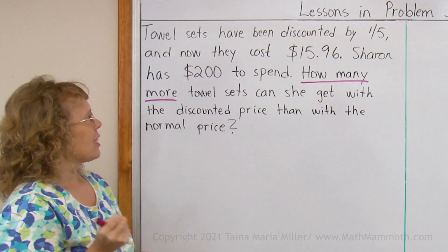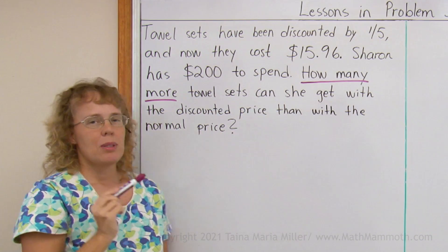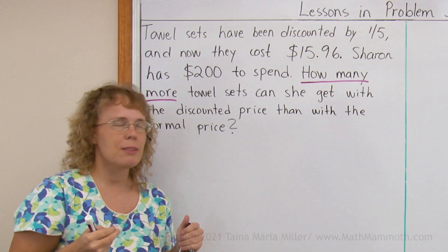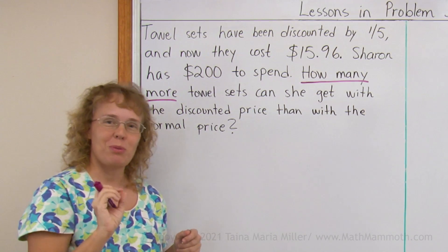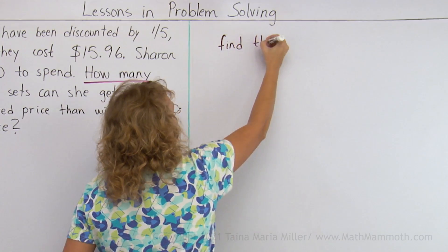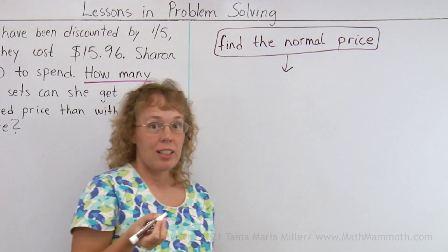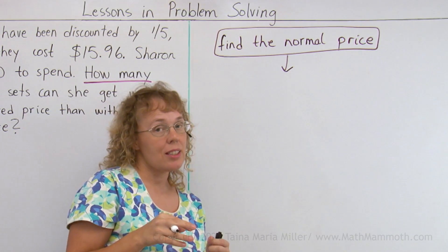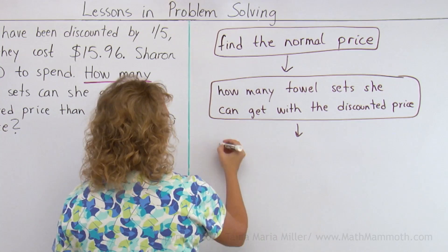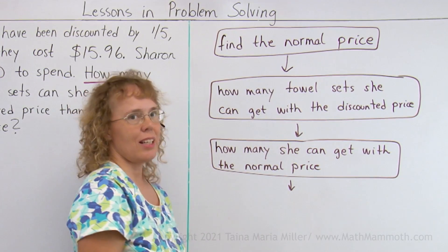How many tile sets can she get with the discounted price? That's given — we can figure out how many she could get with $200. But how many could she get at the normal price? That's something we don't have all the information for, so we need to find the normal price first. Starting with this flowchart, I want to find out the normal price as one step, then how many tile sets she can buy at the discounted price and at the normal price, and lastly the difference of those two.